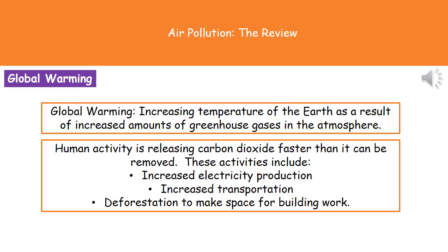One of the main greenhouse gases we need to consider is carbon dioxide. As carbon dioxide levels in the atmosphere increase, the temperature of the Earth also increases. This rise in carbon dioxide is down to human activity — for example, as the population increases, we use more electricity, more lights, heaters, and so on, leading to increased electricity production generally from fossil fuel power plants.